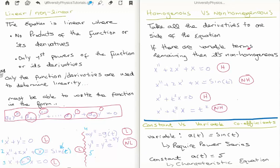Equation four is linear for the same reason as equation two: the coefficient g(t) is a function of t, where y is also a function of t, but we're not doing anything with the function y itself. Equation five is non-linear: we're taking two powers of the function y, which is not allowed, and also taking the exponential of the function y itself, which is not allowed. Even if we had e^{-5t}, the y² term would still make it non-linear.